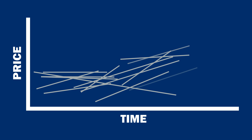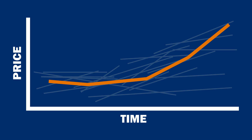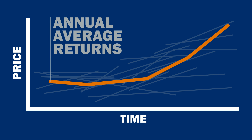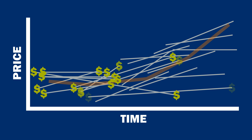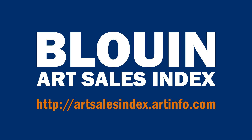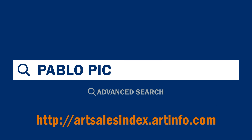Then, if we identify many of these repeat sale pairs over time, for any given year we can average the returns across the different pairs to calculate the average return for art for that year. To create such an index, we would first find the prices for the repeat pairs using an auction data website such as the Bluin Art Sales Index site. Let's search for one artist — for example, Pablo Picasso.